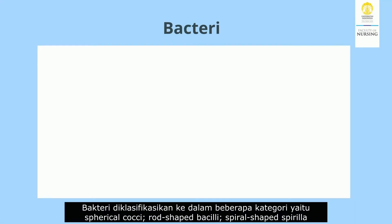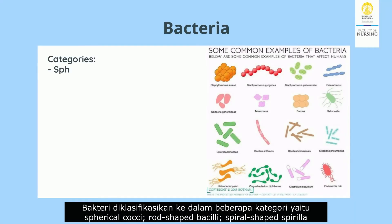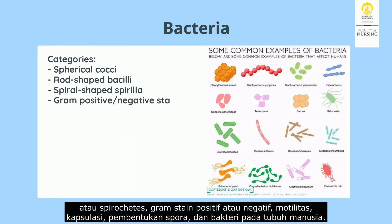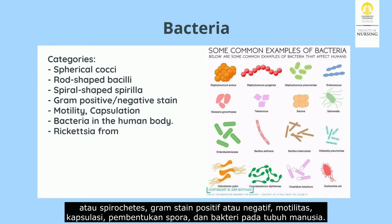Bacteria are classified into several categories: spherical cocci, rod-shaped bacilli, spiral-shaped spirilla or spirochetes, Gram-positive or Gram-negative stain, motility, capsulation, spore formation, and their role in the human body.